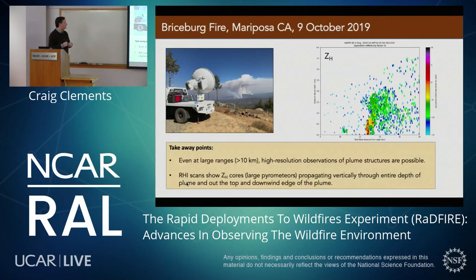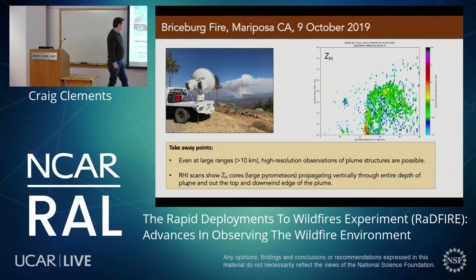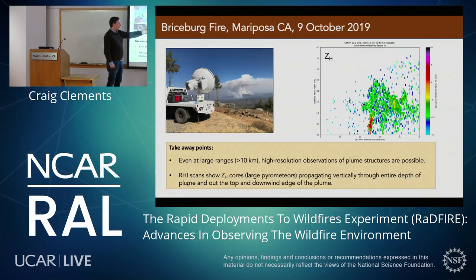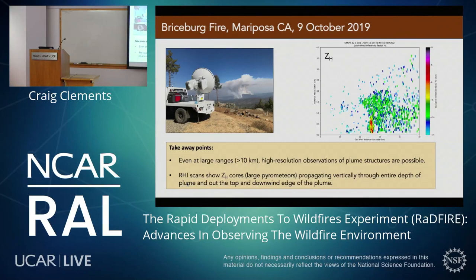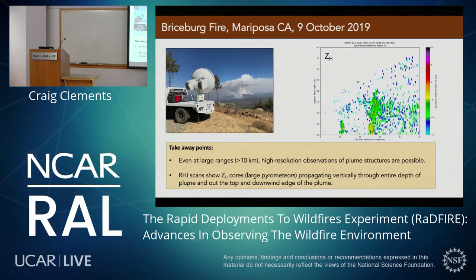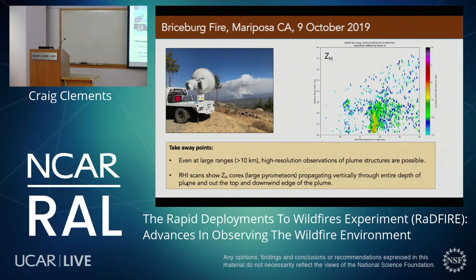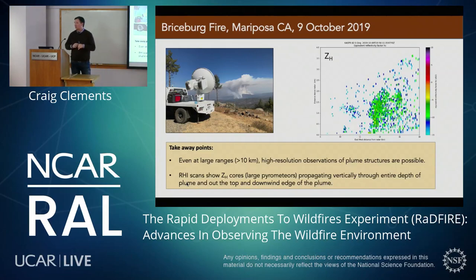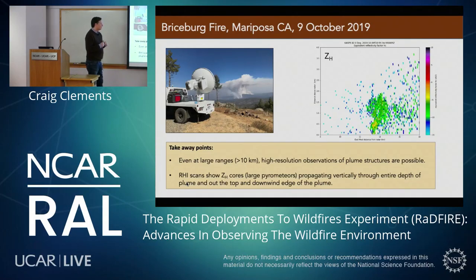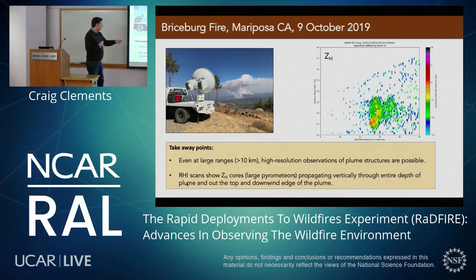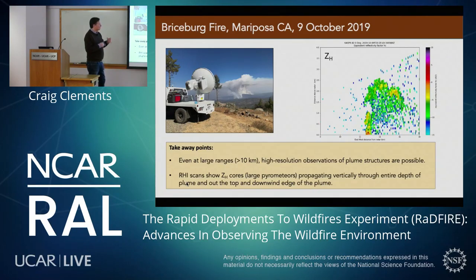Our first deployment was to the Bryceburg fire near Yosemite. We were pretty far away so the data are coarse, but you can see reflectivity cores or pyrometeor cores punching all the way through the top of the plume and being ejected out the backside. Even at large ranges greater than 10 kilometers, we can get high-resolution observations of plume structures. The RHI scans show large pyrometeors propagating vertically through the entire depth of the plume — pretty exciting to see that kind of structure, which we weren't able to catch with the LIDAR before.